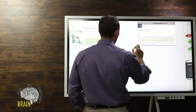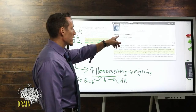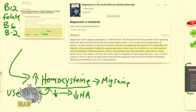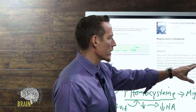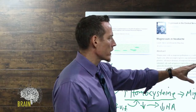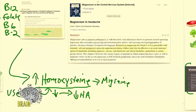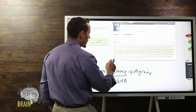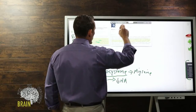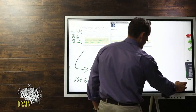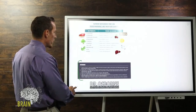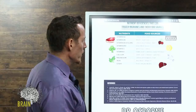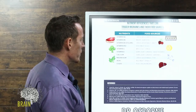Research on magnesium has found it to be a potentially well-tolerated, safe, inexpensive option for migraine prevention, and it may also be effective as an acute treatment for headaches — including migraines, tension-type headaches, and cluster headaches — in certain patient subsets. If you're on medication and haven't heard this, I highly recommend having that conversation with your doctor and looking toward nutritional supplementation to see if you get a reduction in headache frequency and intensity.